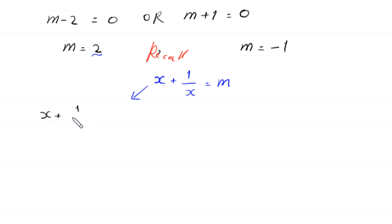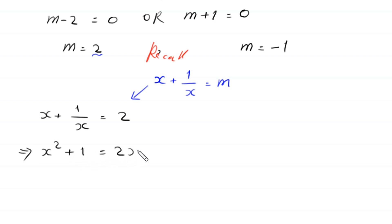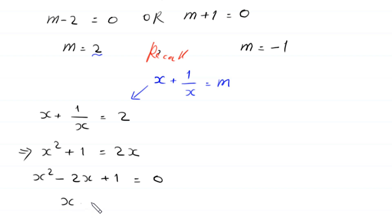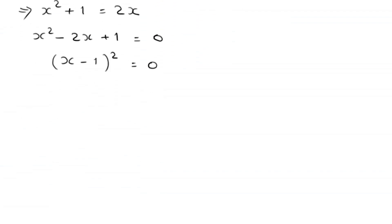First, substituting m equals 2: x plus 1 over x equals 2. Multiplying both sides by x gives x squared plus 1 equals 2x. Moving 2x to the left-hand side: x squared minus 2x plus 1 equals 0. This factors as x minus 1 whole squared equals 0, giving x minus 1 times x minus 1 equals 0, so x equals 1 is a repeated root.